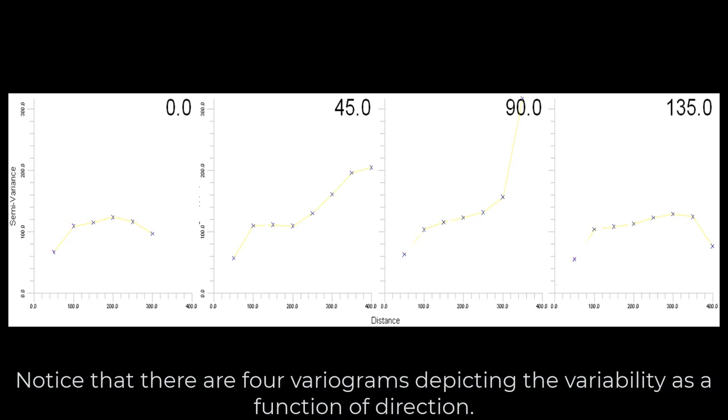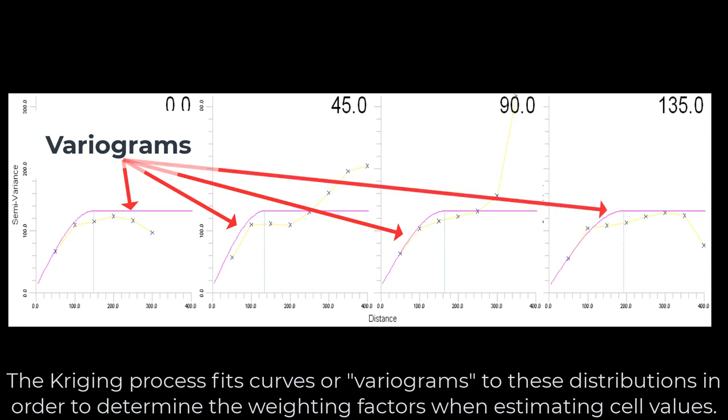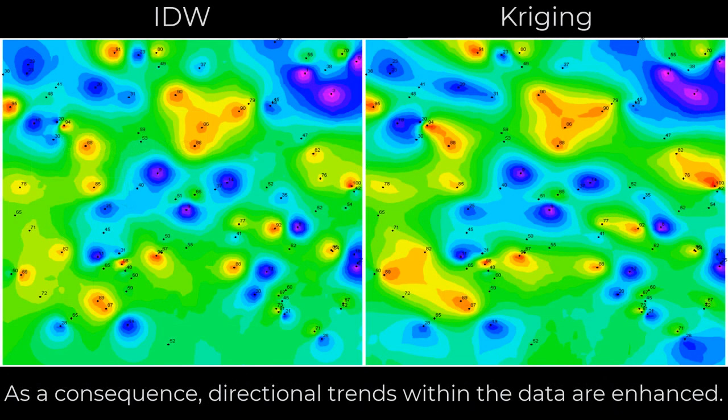Notice that there are four variograms depicting the variability as a function of direction. The Kriging process fits curves or variograms to these distributions in order to determine the weighting factors when estimating cell values. As a consequence, directional trends within the data are enhanced.